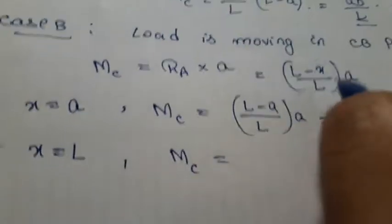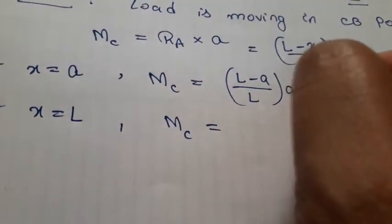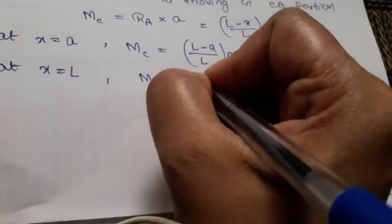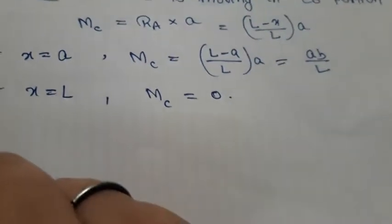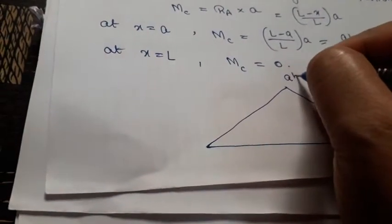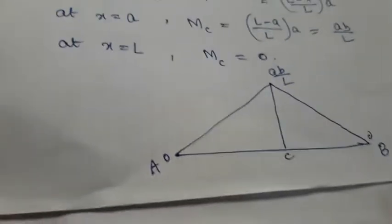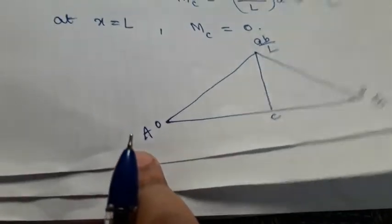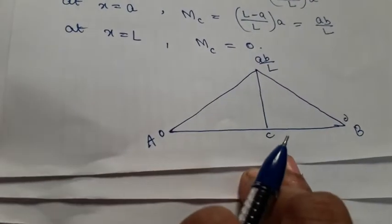At X = L, MC = (L − L)/L × A = 0. So the moment is zero at both supports. The influence line diagram for the bending moment has a triangular shape: zero at A, rising to a maximum ordinate of AB/L at point C, and back to zero at B. This is the ILD for bending moment on a simply supported beam with a single point load.